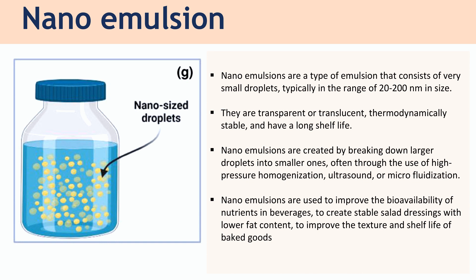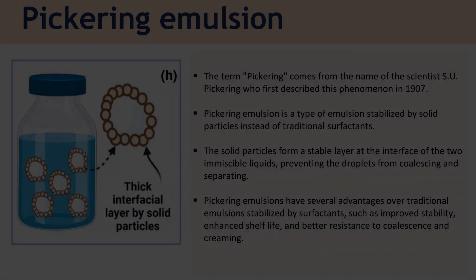Nano emulsions are created by breaking down larger droplets into smaller ones, often through the use of high-pressure homogenization, ultrasound, or microfluidization. Nano emulsions are used to improve the bioavailability of nutrients in beverages, to create stable salad dressings with lower fat content, and also to improve the texture and shelf life of baked goods.